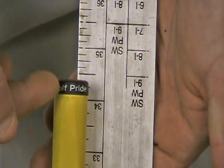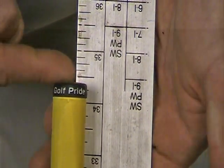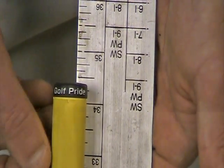From here, you just measured the edge of the grip cap, which in this case happens to be 34 and a quarter inches. And that's how to measure the length of a putter accurately.